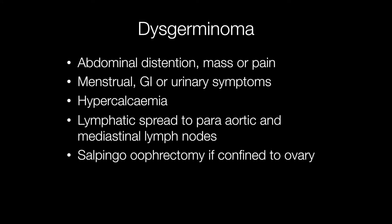Dysgerminomas may present with abdominal distension, mass or pain, and there may be menstrual disturbance or gastrointestinal or urinary symptoms, and occasionally there may be hypercalcaemia.